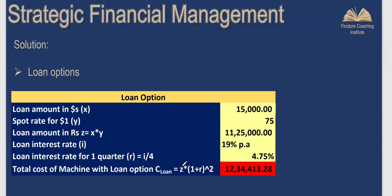The total cost for the loan option is the principal amount in rupees compounded at 4.75% quarterly for two quarters. You can calculate interest for the first quarter, add it to the principal, then apply 4.75% again for the second quarter. This gives the total payment at the end of quarter two including principal — that is the payment the company must make under the loan option.